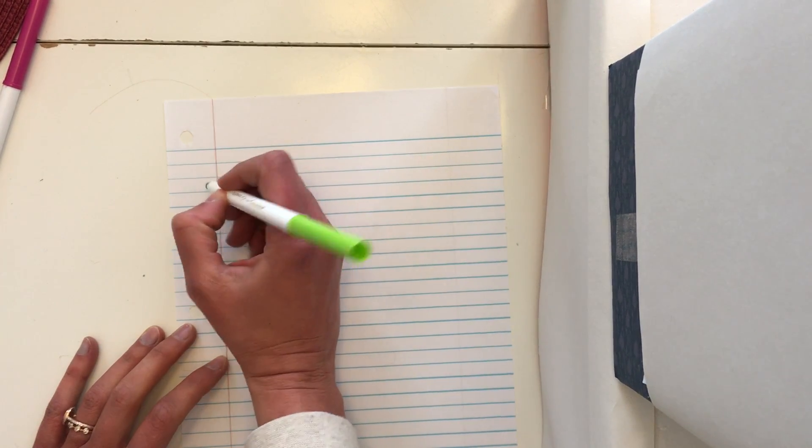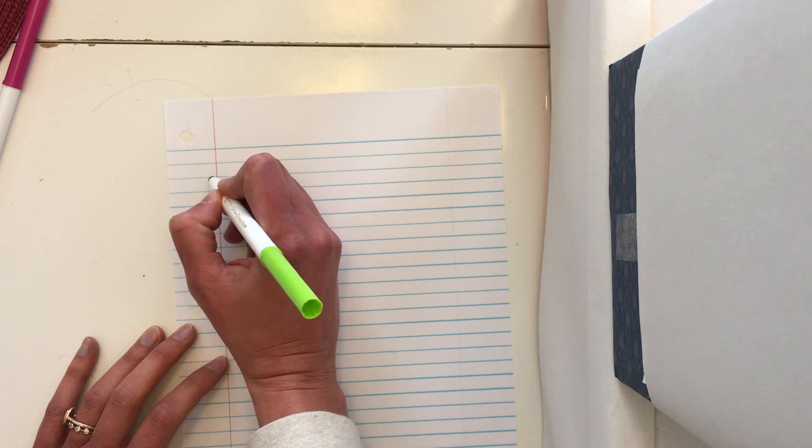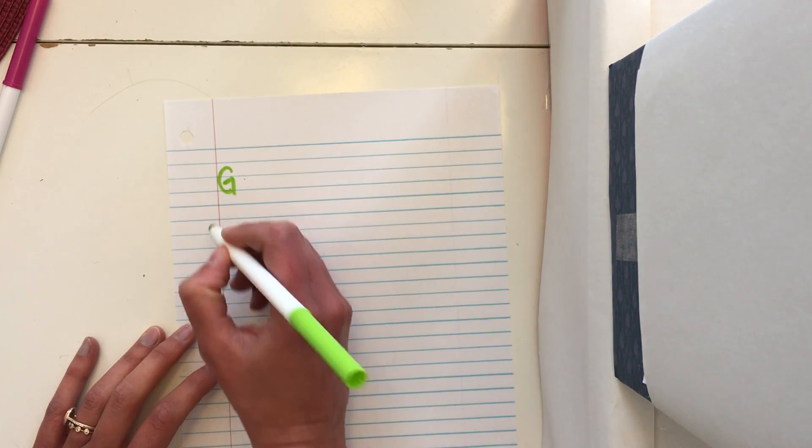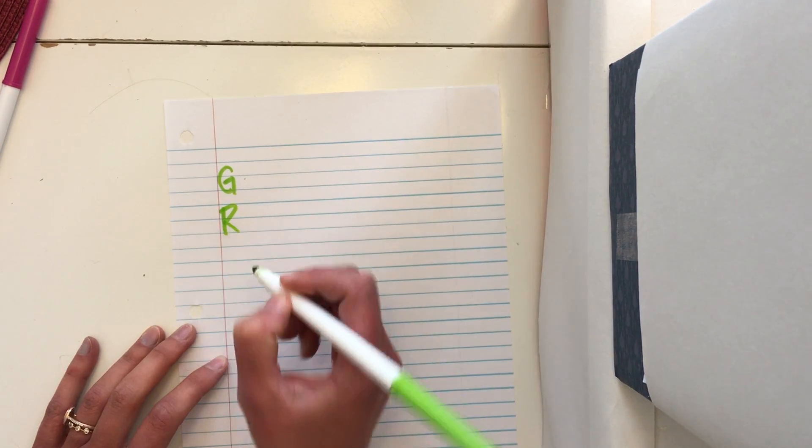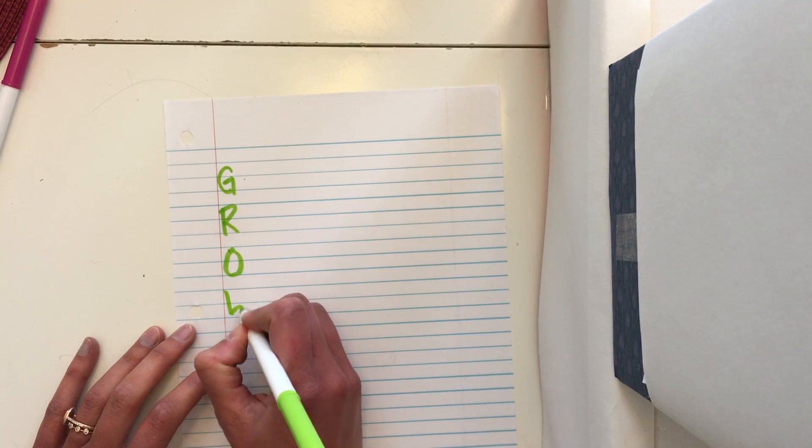So as an example, we're going to set up our acrostic poem. And so to do that, if I'm going to choose the word grow, you don't have to do this in marker, you can do this in pen or pencil, but I'm going to put a big G here. I'm going to skip a line, do an R. I'm going to skip a line, do an O, and then skip and do a W.